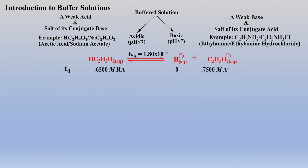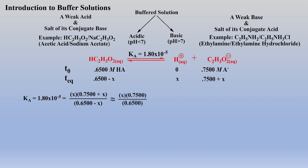At this point, it is worth our efforts to look closer at our equilibrium expression and derive the Henderson-Hasselbalch equation with the buffered solution shown. We place the equilibrium concentrations into our equilibrium expression, followed by simplification via the 5% rule, and rearranging for x. Because x is equal to the proton concentration, let's substitute the proton concentration into our expression.